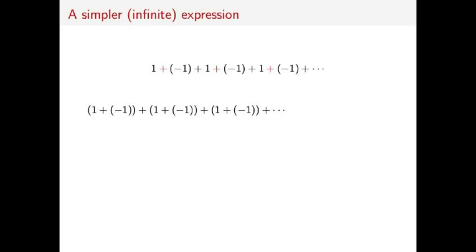Well, one way we could do it is to do every other sum starting with the first. So we get 1 plus negative 1 plus 1 plus negative 1 plus and so on. This just equals 0 plus 0 plus 0 plus 0, and we'd probably say this is 0.